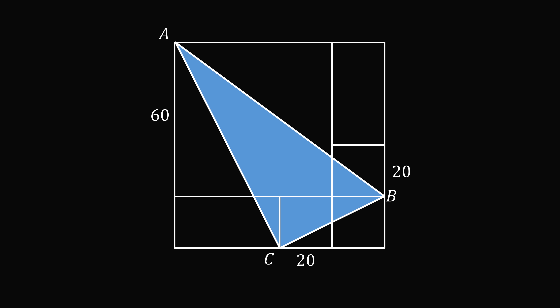Let's label these lengths. The large square has a side length of 60. Each small square has a side length of 20. Then 60 minus 20 equals 40. We have 20 here, another 20, then 60 minus 20 which equals 40, and finally 20 again. So how does this diagram help us?